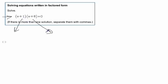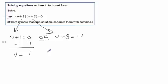All we do is create two mini problems: v + 1 = 0 or v + 8 = 0. Solve each individually. Subtract 1 from both sides to get v = -1, or subtract 8 to get v = -8. We write the answer as v = -1, -8.